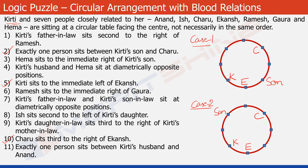Look at statement 3 now. It says that Hema sits to the immediate right of Kirti's son. In Case 1, this is Kirti's son, so the position of Hema would be this one — let's write H here, which denotes Hema. In Case 2, this is Kirti's son, so this would be the position of Hema.